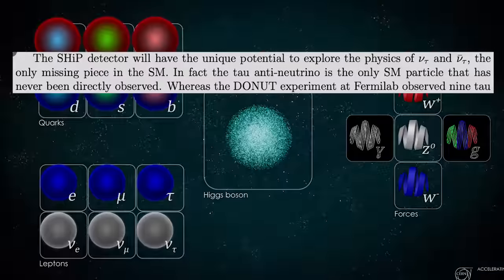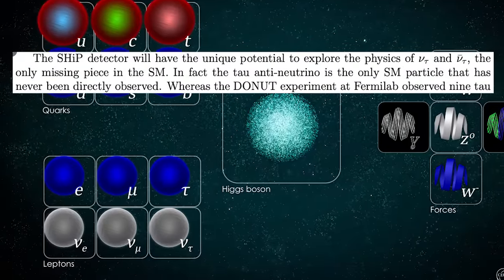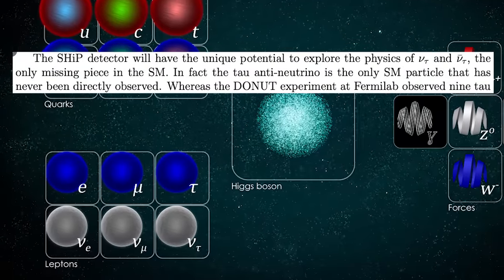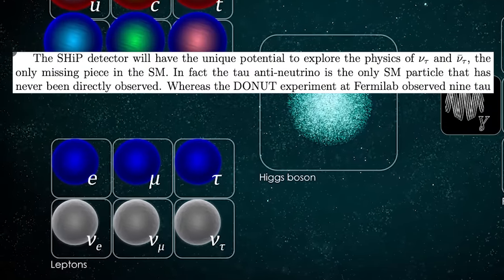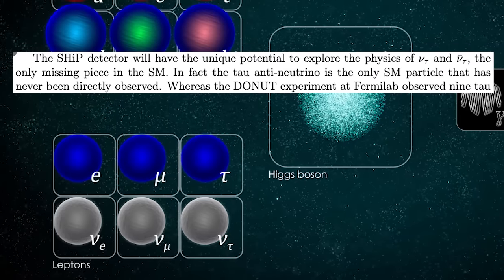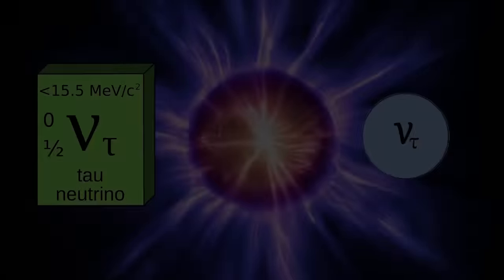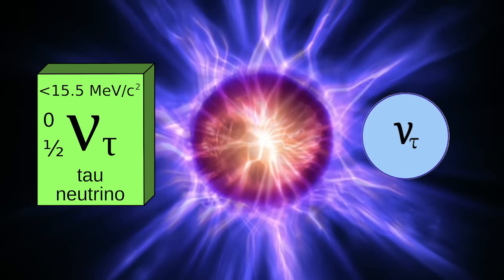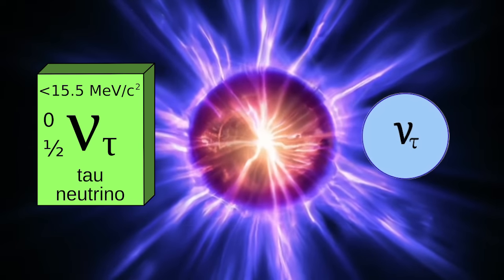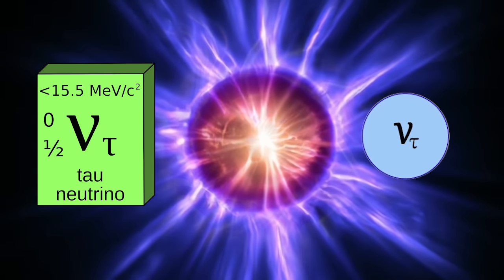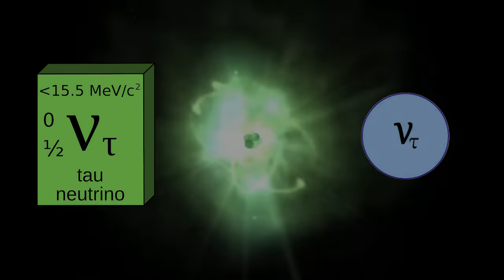So how can we finally right this oversight and complete our direct observations of all the Standard Model anti-neutrinos? To understand that, we first need to understand how the Tau neutrino was experimentally observed.